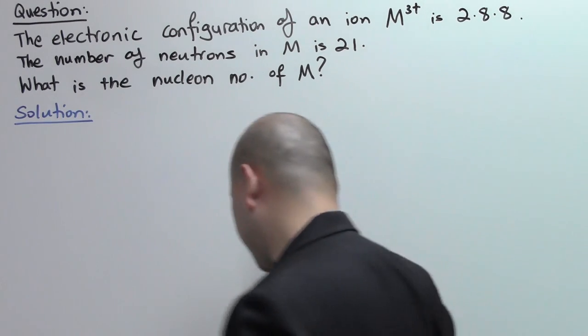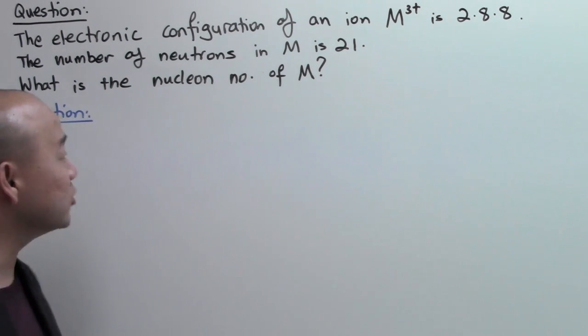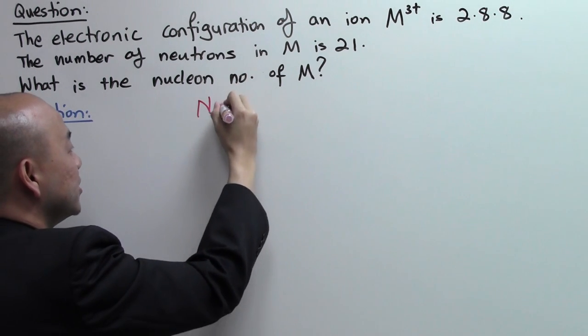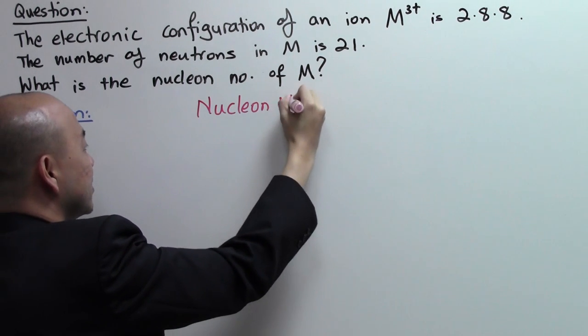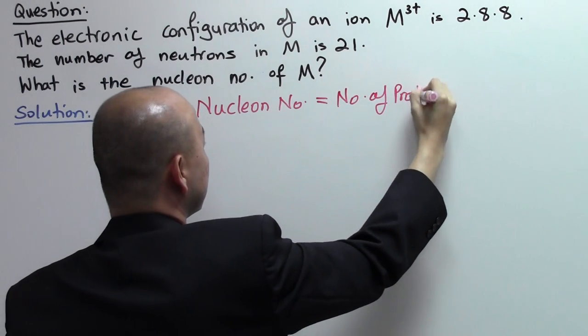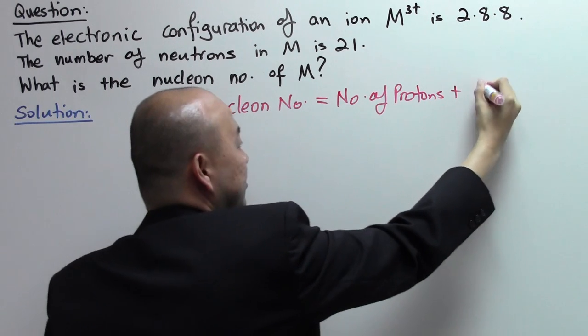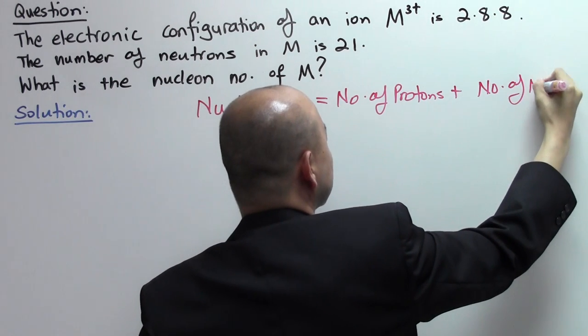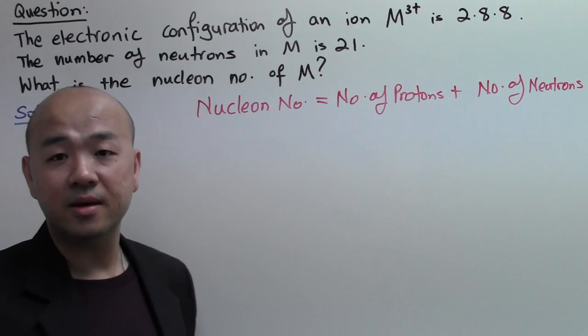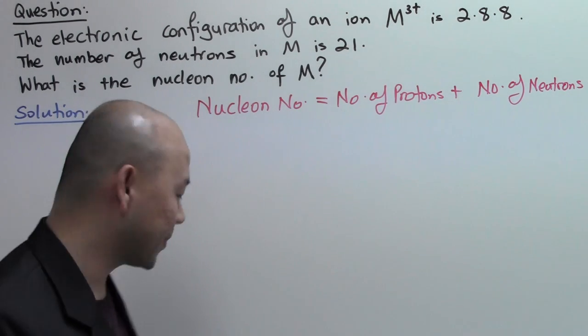Let's take a look how we should solve this question. First thing, you must understand what they are asking for. Now, nucleon number, you need to know the formula. Nucleon number is given as the number of protons plus the number of neutrons inside the nucleus of an atom.